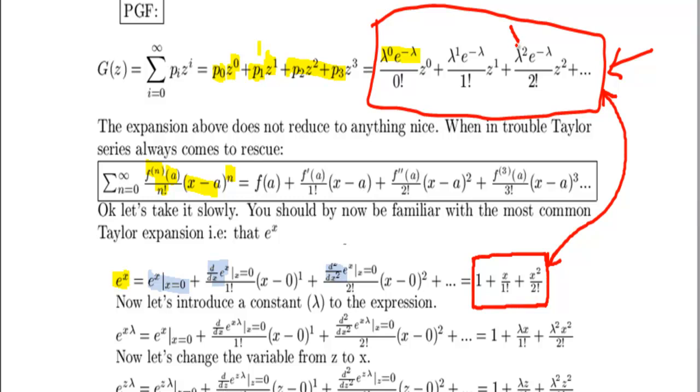For instance, we don't have lambda, and it looks like that we've got a different variable, we've got x here, and this expression here has z, and then we've got this expression as well, which is e to the power of minus lambda.